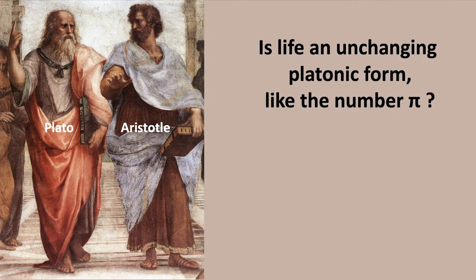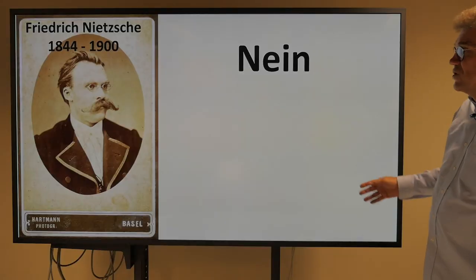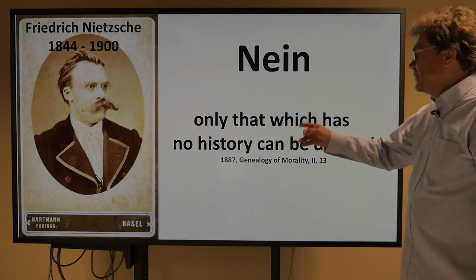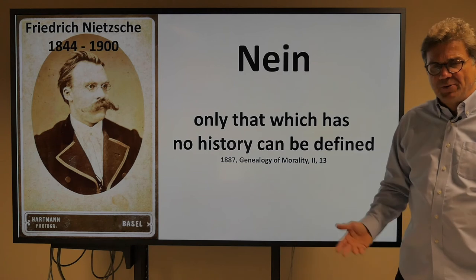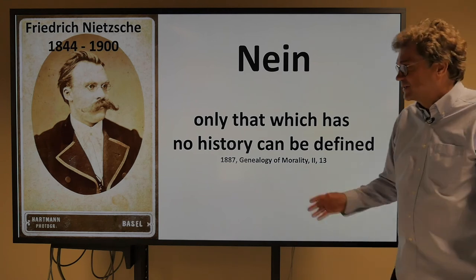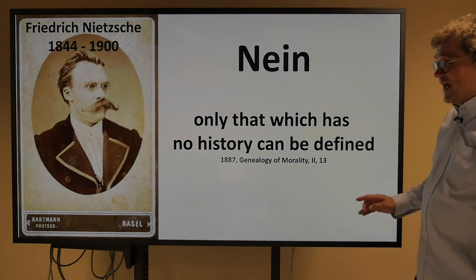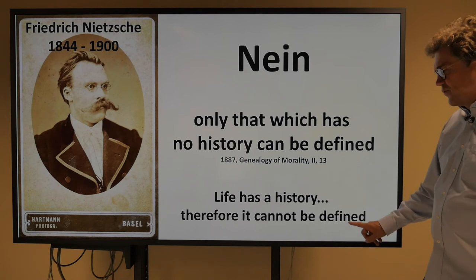Plato and Aristotle discussed some of this. We could ask: is life an unchanging Platonic form, like the number pi — does it have a stable, unchanging definition? Nietzsche says no: 'Only that which has no history can be defined.' Pi has no history; it's just a number and hasn't evolved, therefore it can be defined. But life has a history, therefore it cannot be defined.